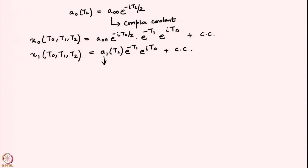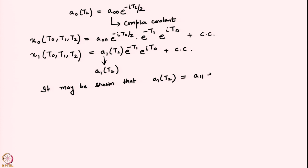We need to determine A1 as a function of T2. It is clear that we will have to go to the next order to do this. The procedure is now straightforward, so it may be shown that A1(T2) = A11 · e^(−iT2/2), where A11 is once again a complex constant. This I leave to you to show — it is not difficult.